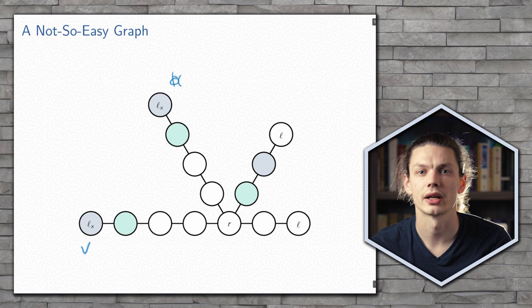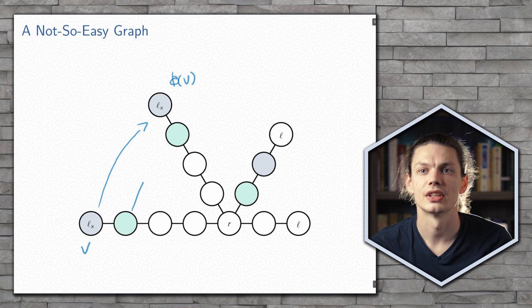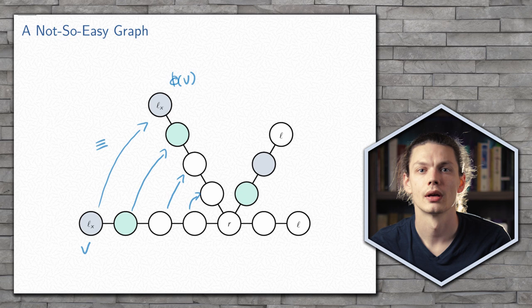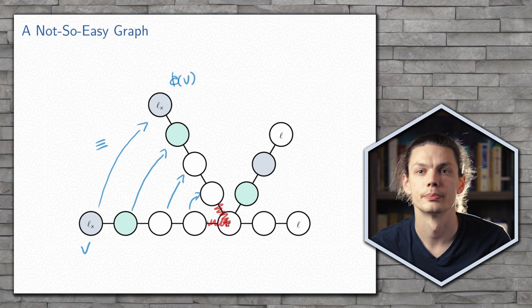So if we go back to our example here, the vertices along each of these branches must act the same. And so once we get to the centre of that path, because these must act the same, we will always end up with a collision at the centre, which prevents the message from either V or its image from reaching the other.